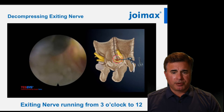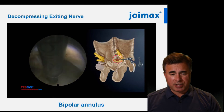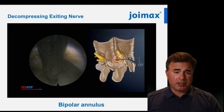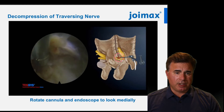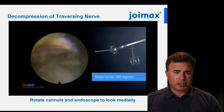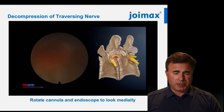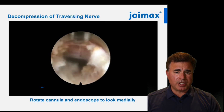In this video the exiting nerve root is running from 3 o'clock to 12 o'clock, and here the surgeon is bipolar in the annulus. There's really nothing pressing on the exiting nerve root at this point — if this were a far lateral discectomy or an extra-foraminal disc herniation, surgery would be over. However, if the disc herniation extended more medially or this was a paramedian disc extrusion, you would want to look into the spinal canal by rotating the cannula and endoscope. Here you'll see some disc material being removed, and when it's removed you'll see the pulsating dura and be looking underneath the traversing nerve root — a unique perspective that only transforaminal endoscopic surgery provides.